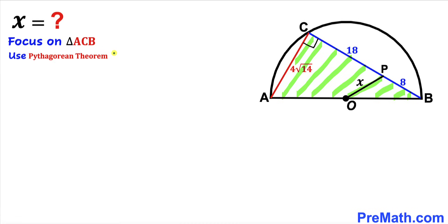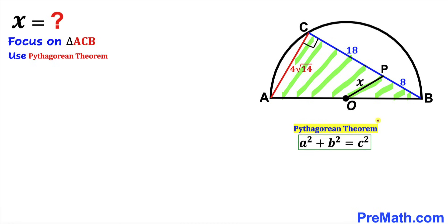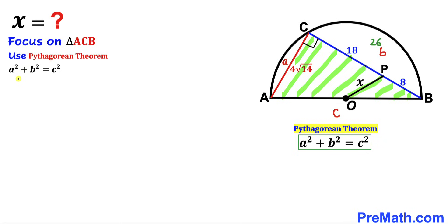We will use the Pythagorean theorem to calculate side length AB of this triangle. The formula is a² + b² = c², where we call the longest side c. Side AC is lowercase a, and side BC is lowercase b. Note that BC equals 18 plus 8, which is 26 units. So: (4√14)² + 26² = c².